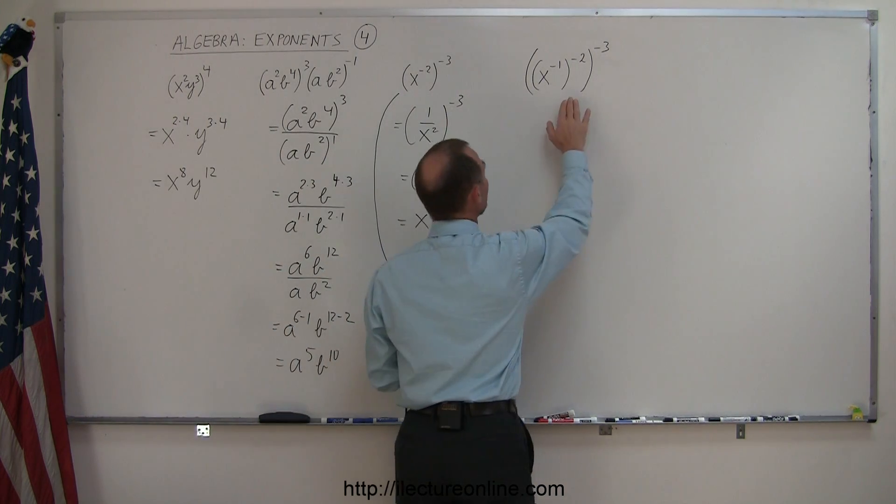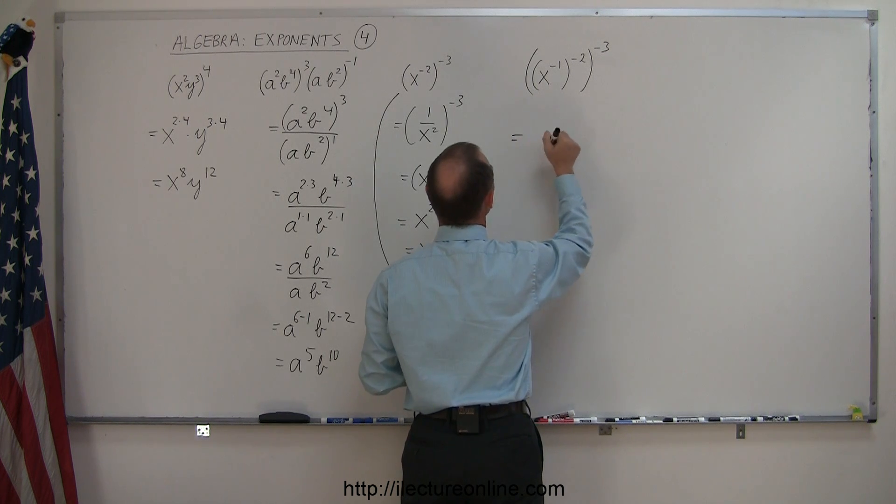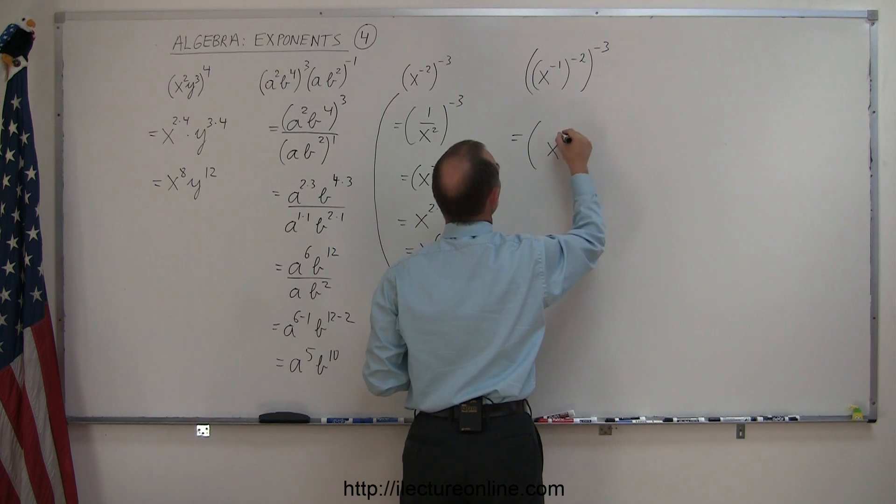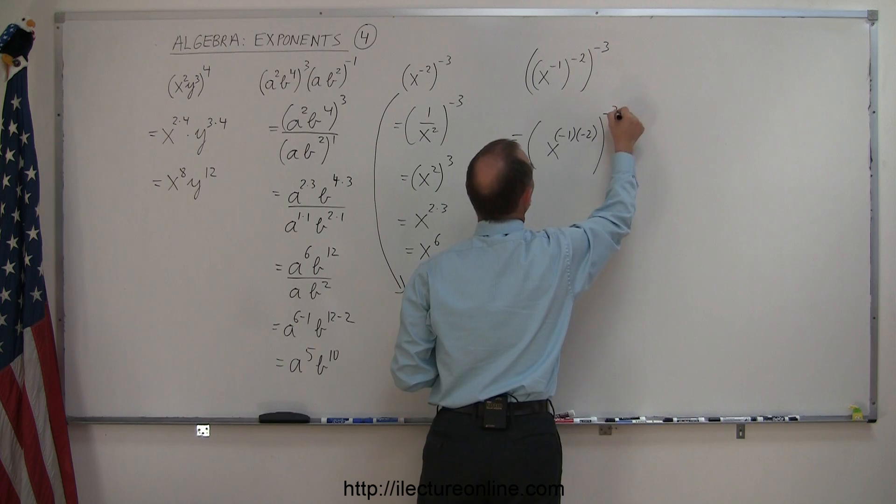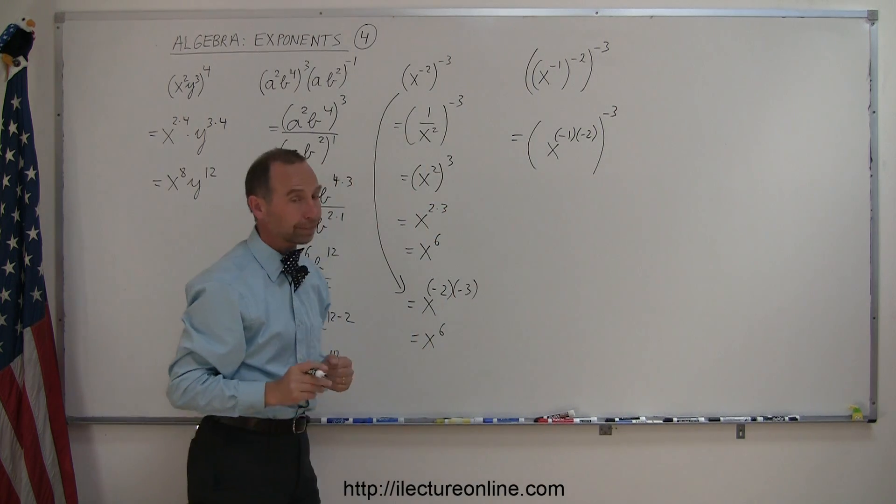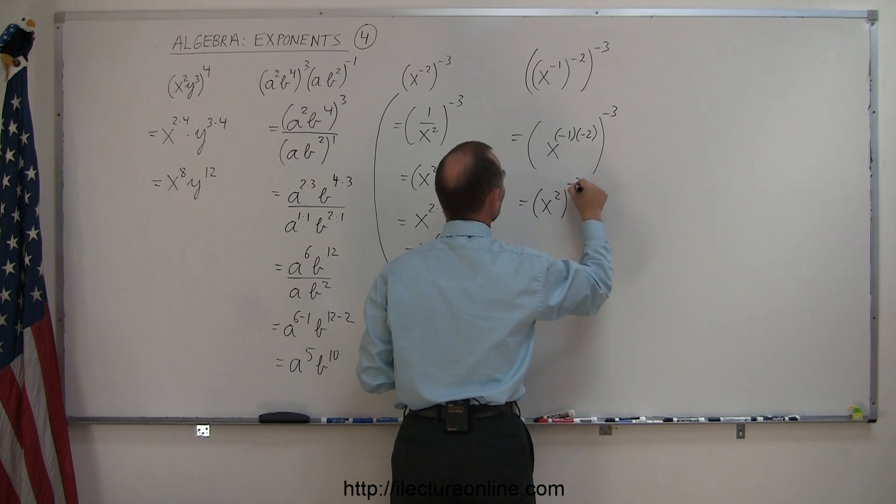So applying that over here, what do we get? Let's work from the inside to the outside. So the first thing I'm going to do is apply this exponent to this exponent. So this gives me x to the minus 1 times negative 2. And the whole thing still raised to the negative 3 power like that. Then what I can do here is multiply this out, so I get x to the 2nd power, the whole thing raised to the minus 3 power.